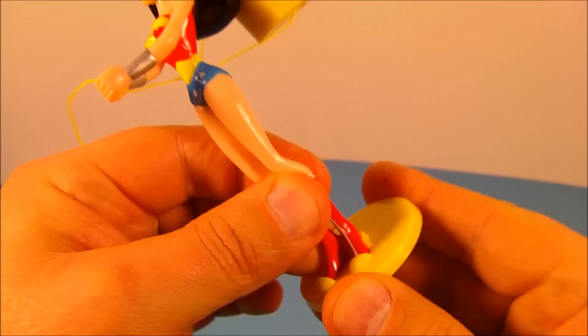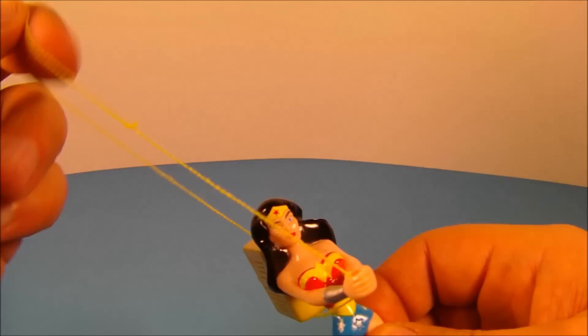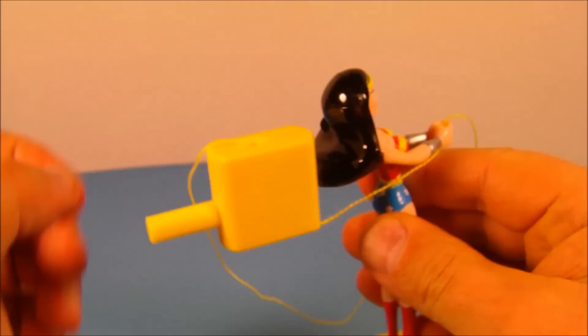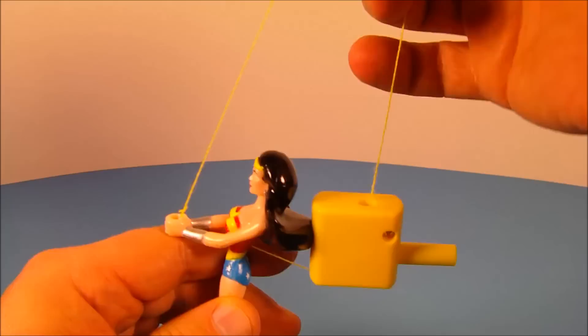It comes with this little yellow thread that loops through her hands and through her little backpack here, and what you do is you blow into this and the string blows up in the air. It goes up and pushes the string up and makes it look like she's throwing it around. Let's give it a try.